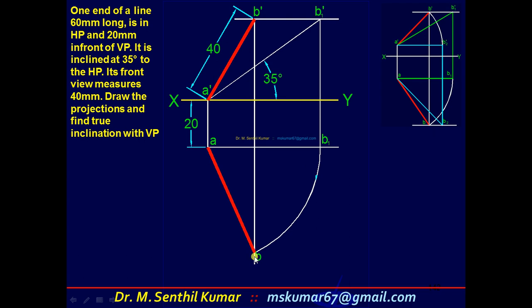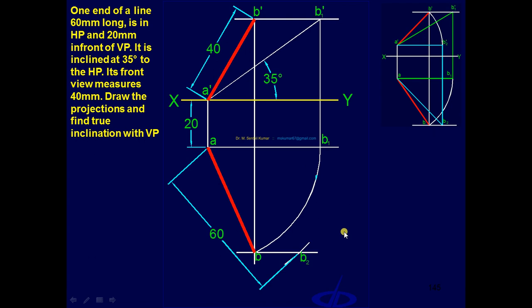Draw a locus. Then set the compass to 60, that is true length. So now we are about to construct the preliminary top view. Set a b2 whose length is 60. Preliminary top view line is drawn.